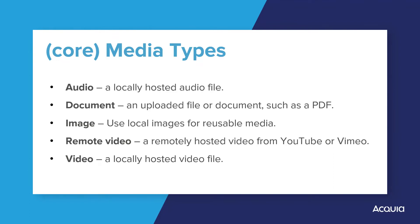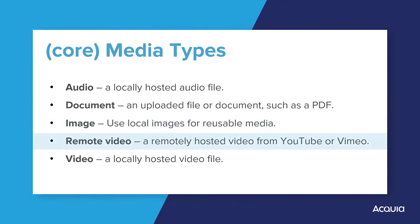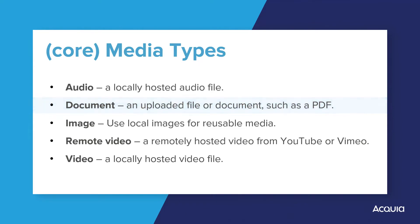A classic example are images. An image file is a source of media for image types, so content editors will be presented with a file upload element. A YouTube video is a source of media for remote video types, and so editors will be presented with a text field to input the video URL. A PDF file can be a source of document media types, and as such, editors will be presented with a file upload element.